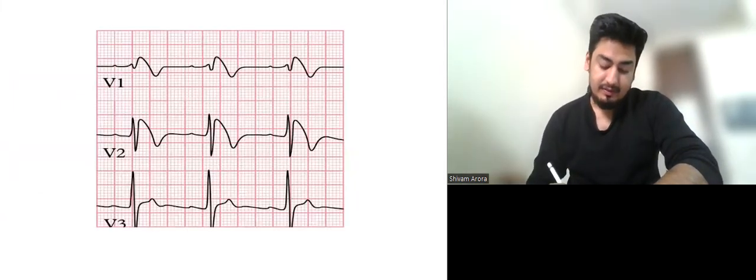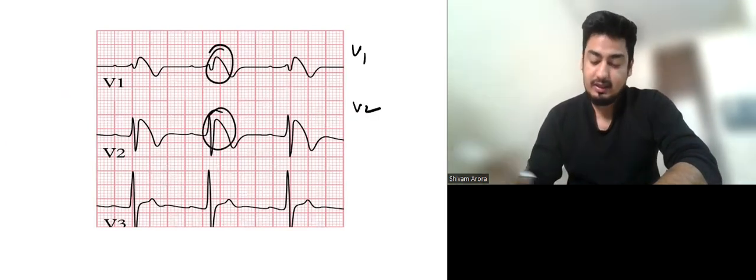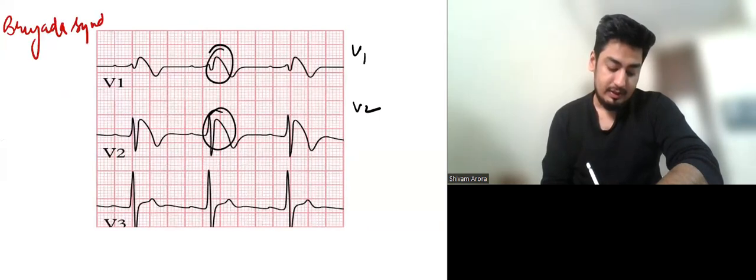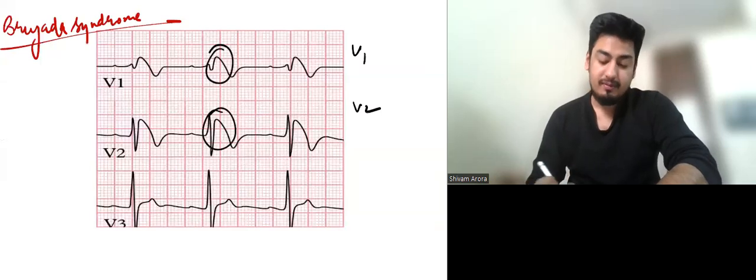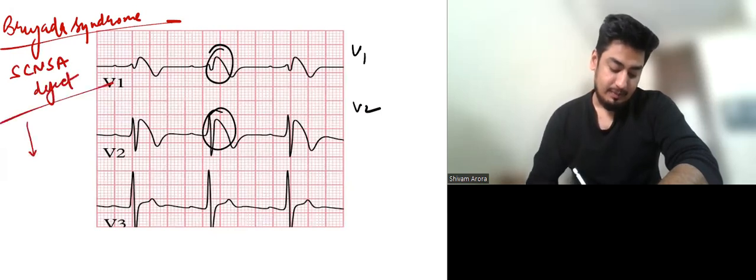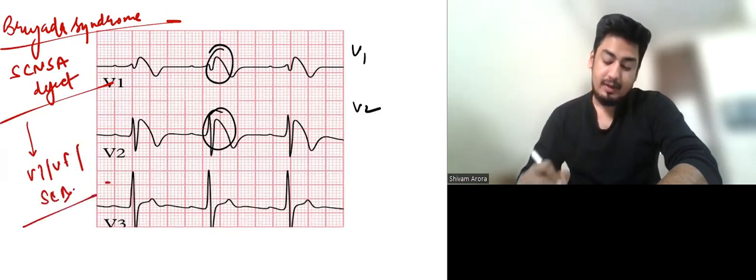So this is the ECG of Brugada. So in this we can see that there is cove pattern elevation in V1 and V2. Other than that what are the things that are seen in Brugada syndrome?